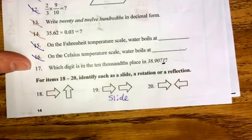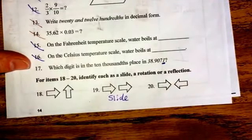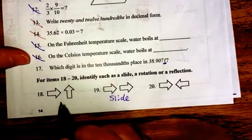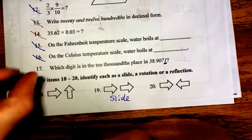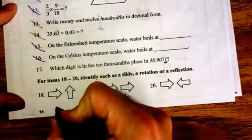Okay, a rotation means that you were facing one way and you turned another way. So this arrow was facing this way, and if I were to turn this arrow that way, that would be a rotation.